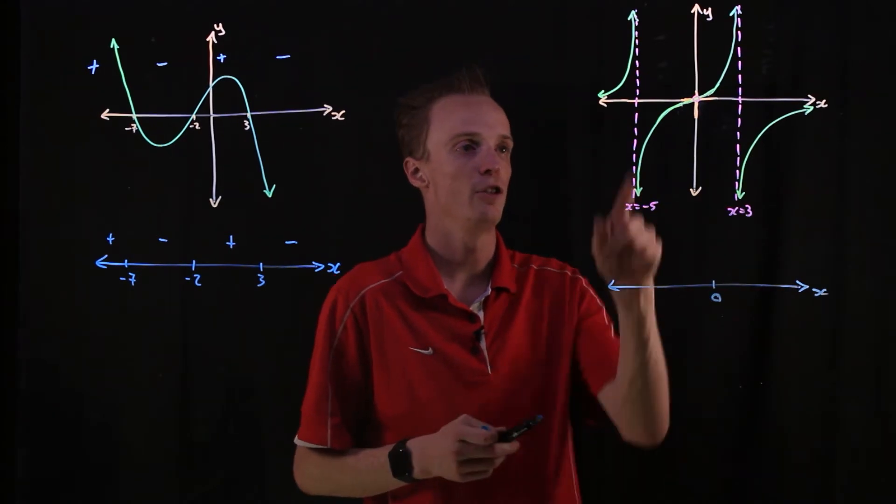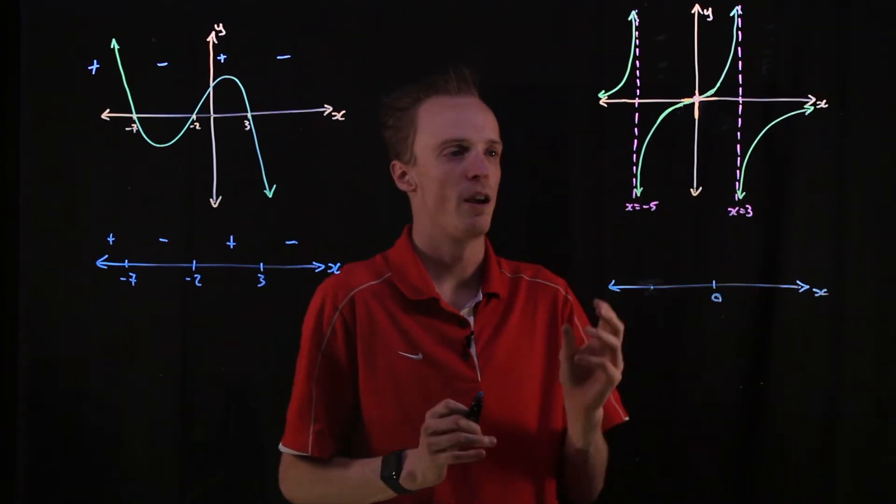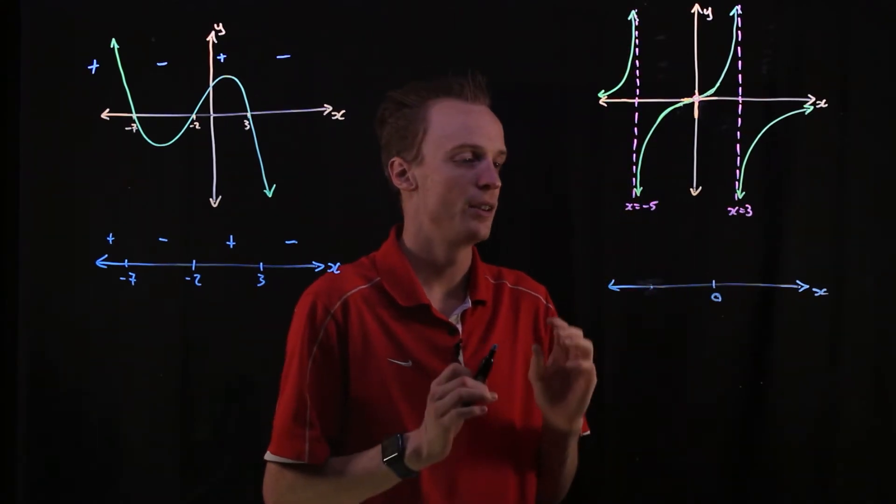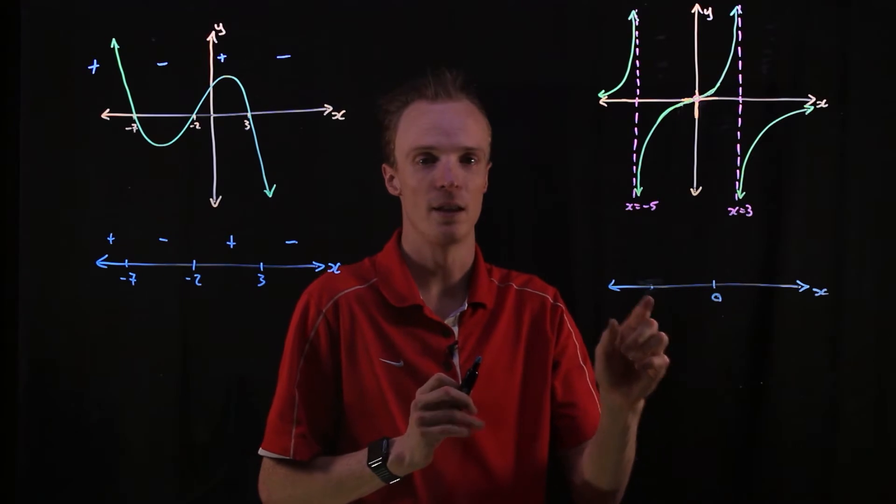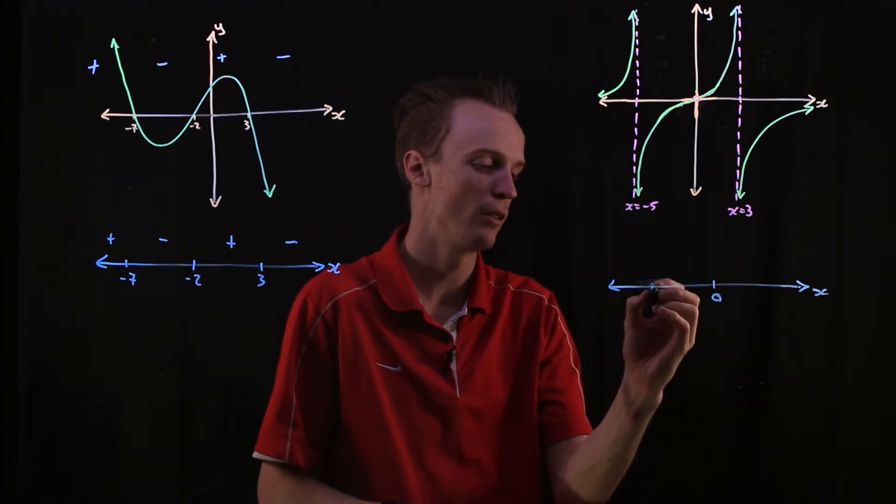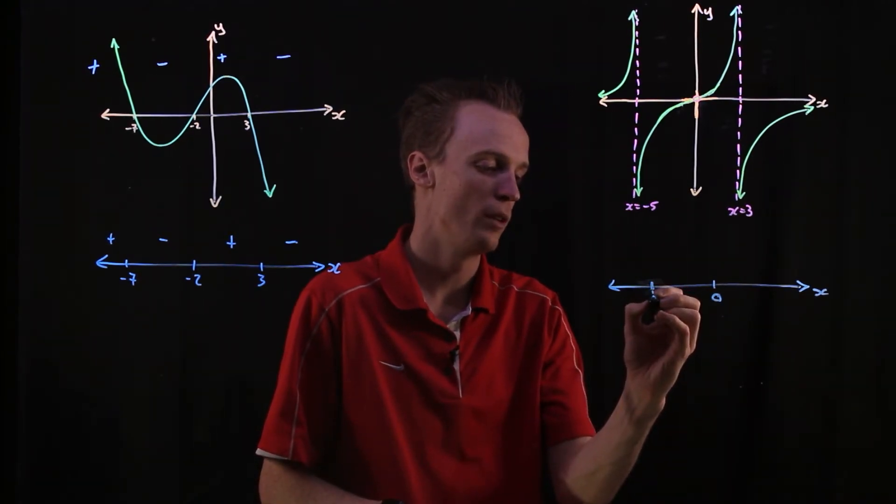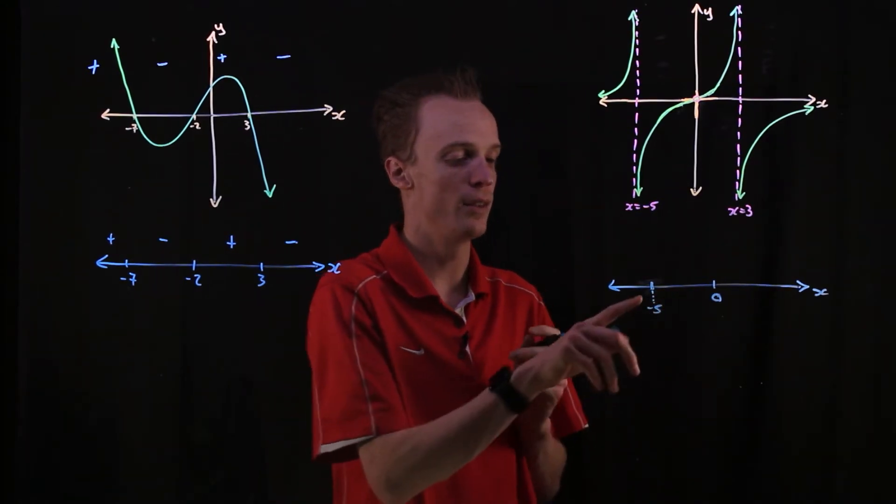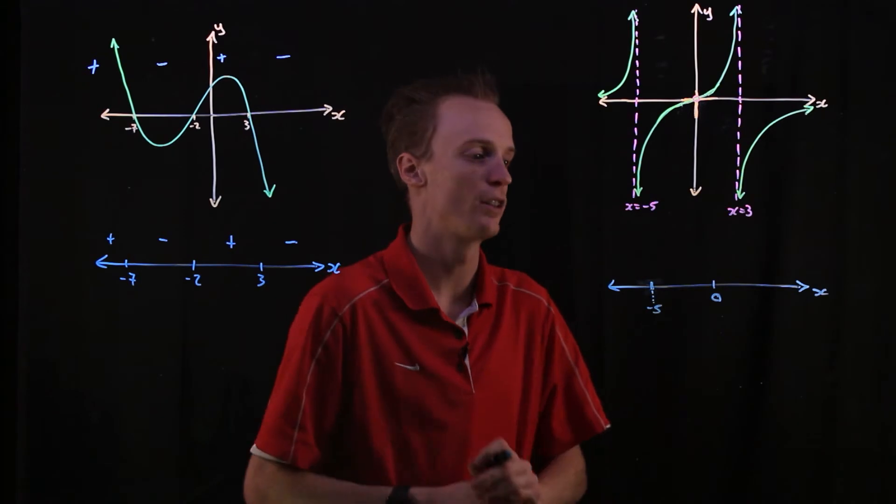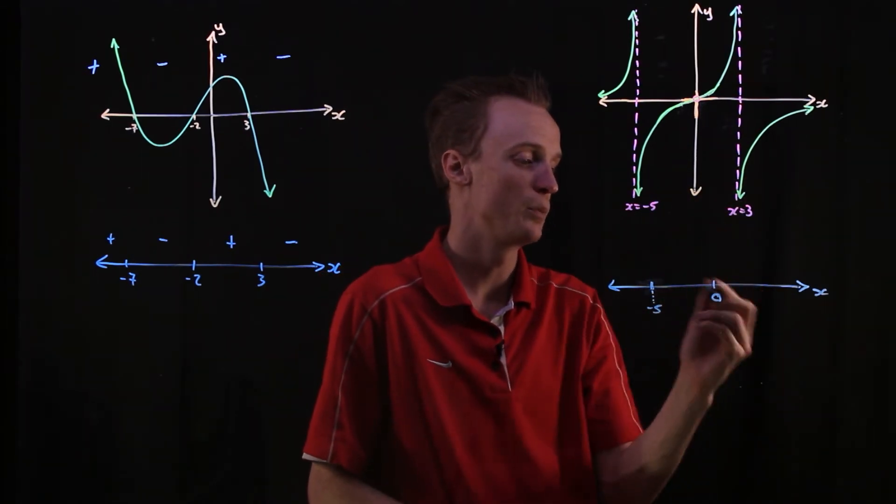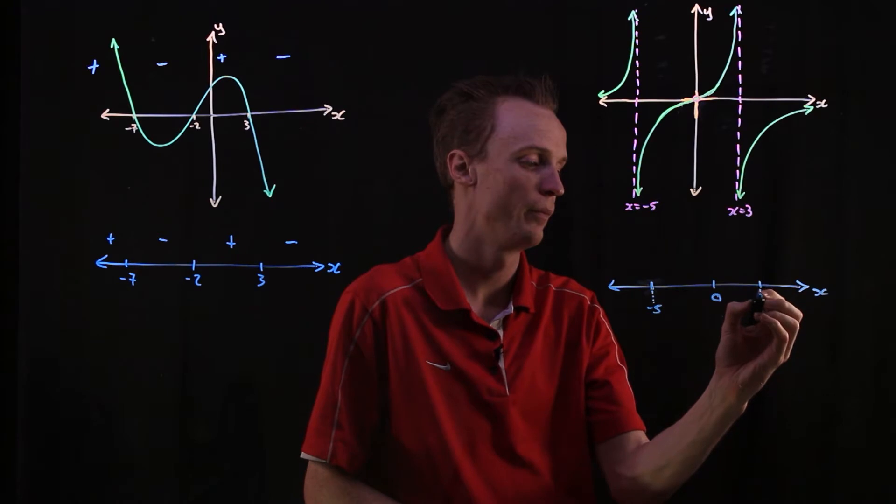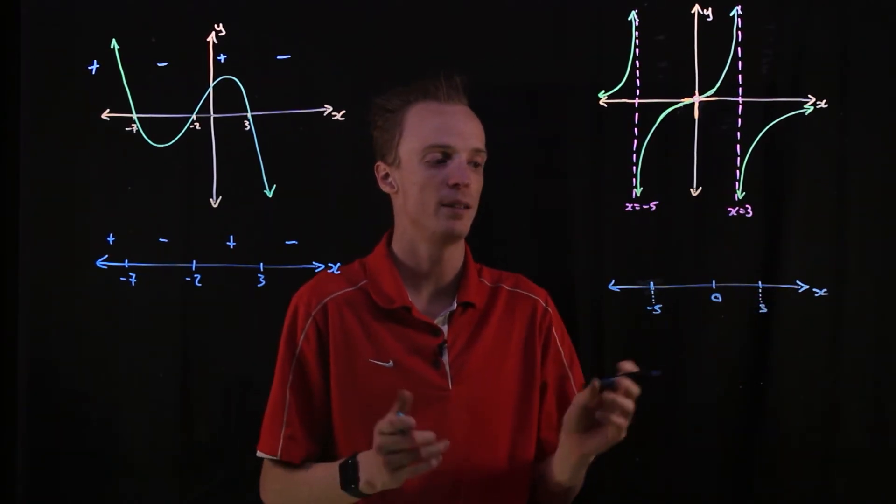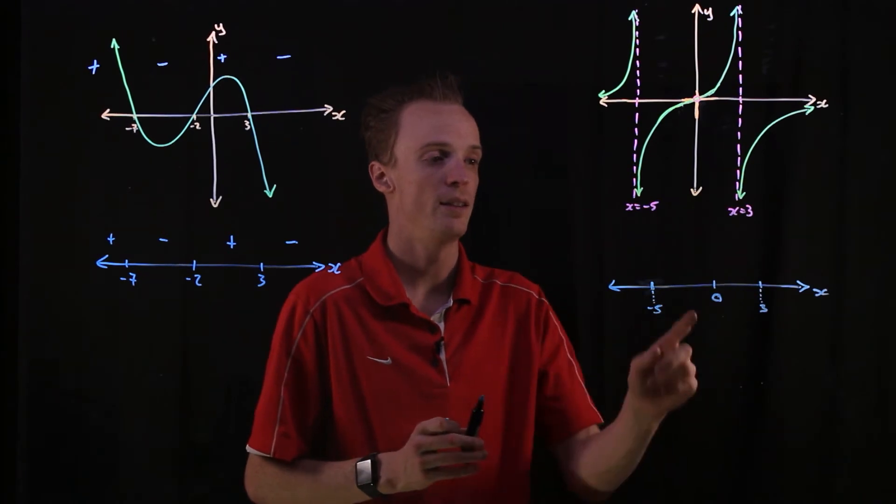And now we've got to indicate this asymptote. Now on the graph, we generally actually indicate an asymptote with a dotted or dashed line. So I'm actually going to do the same here. So instead of doing a solid line, I'm going to draw a dashed line to my number to indicate here that this is an asymptote, not an intersection. I'll do the same when I'm doing this positive 3 value to indicate that these two are asymptotes. This one here is an intersect.